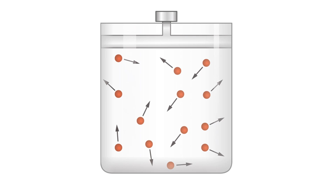The force that these gases exert against the surfaces they come in contact with is known as air pressure. Air pressure is largely dictated by gravity, meaning the closer you are to the Earth, the more gravity there is. This causes the gas molecules to be more tightly compacted and exert more force against the surfaces they come in contact with, meaning the air pressure is higher.